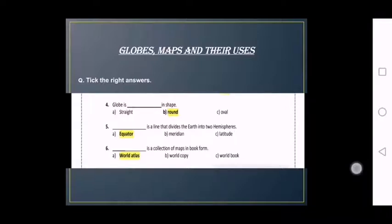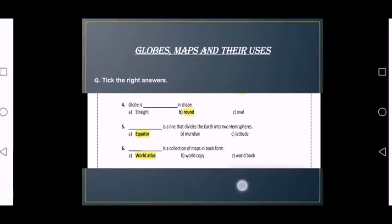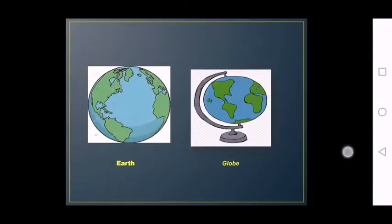Globe is dash in shape. I mean the globe is round shape. You can see this in this picture. The globe is round shape.